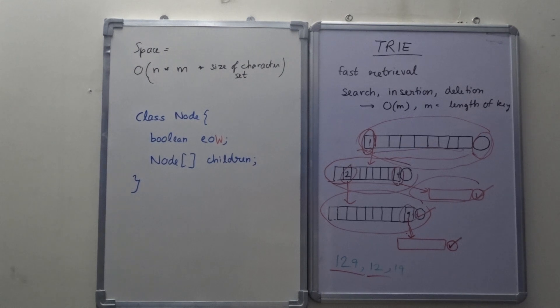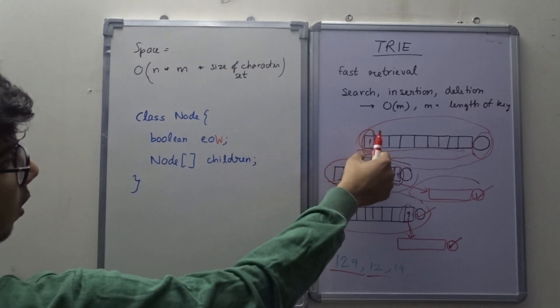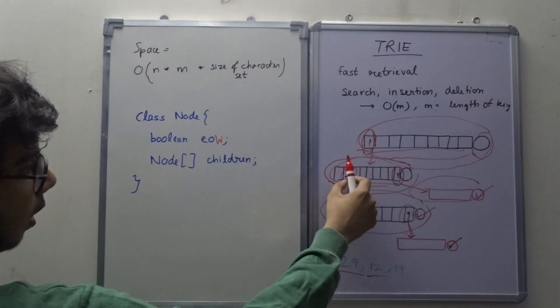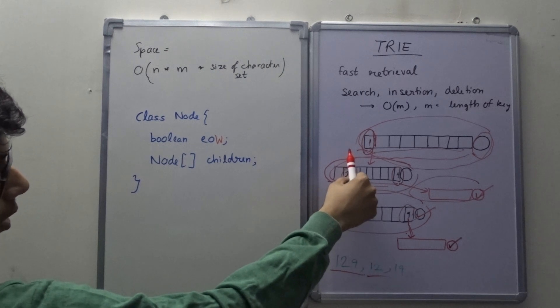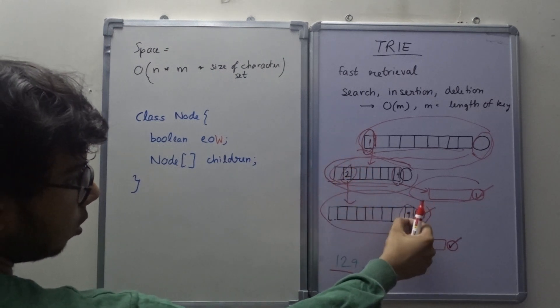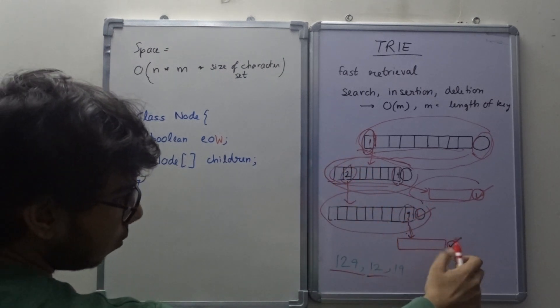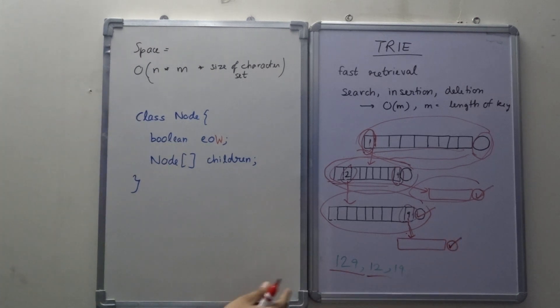Now I have to search for a key, let's say I have to search for 129. Then also I can do it in big O(m), because first I go to 1, then I go in its children array, I look at position 2, and in its children array, I look at position 9. And I check if end of word is true, so yes, 129 is present in the Trie. So search can also be performed in big O(m).